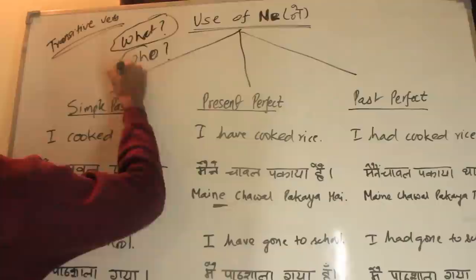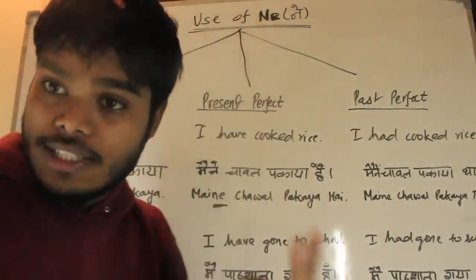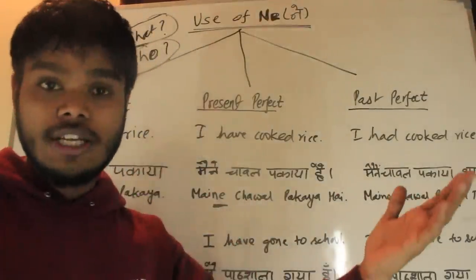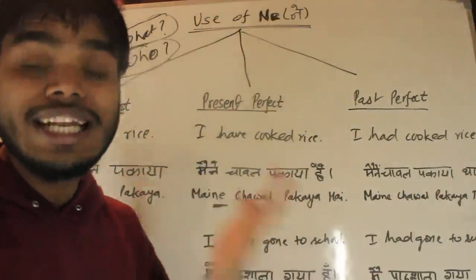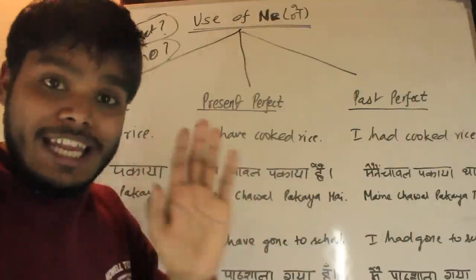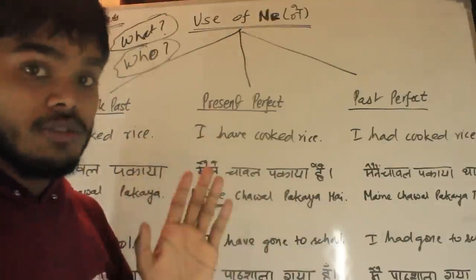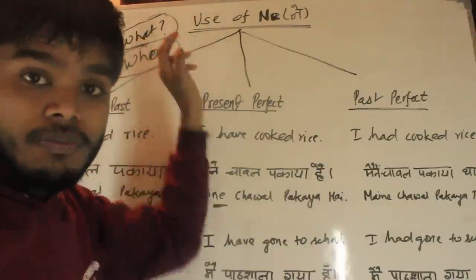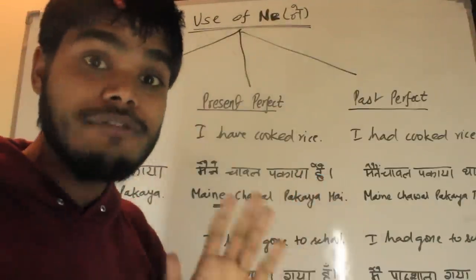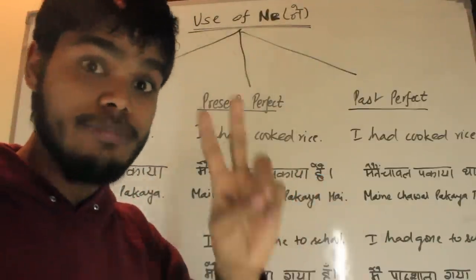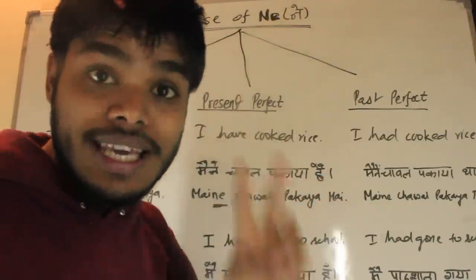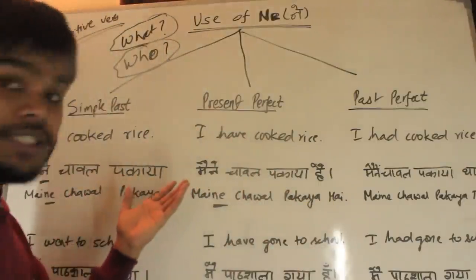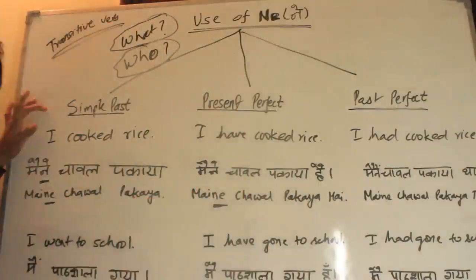How do you decide if the verb is transitive or intransitive? Very simple — you ask two questions: 'what?' and 'who?' If you get answers for both, the subject will take Ne. If you don't get an answer for 'what?' or for 'who?' then Ne won't apply. You have to get both answers — both are compulsory to apply Ne.